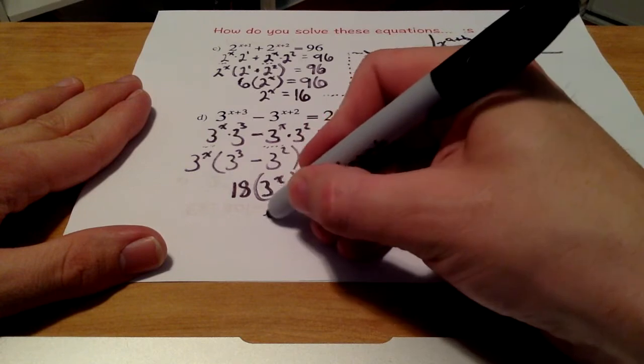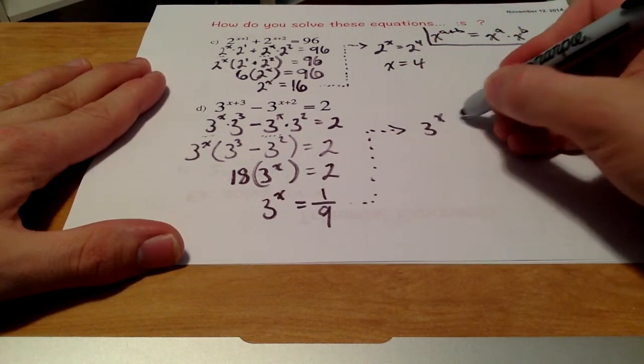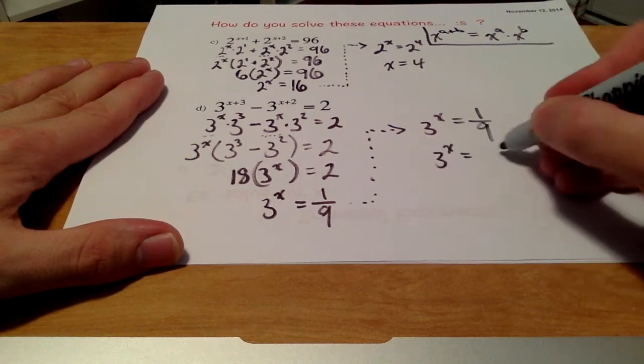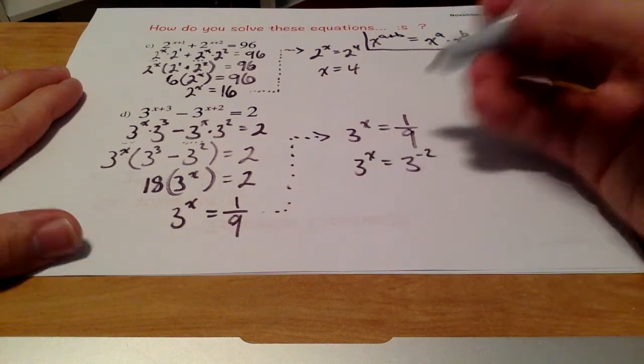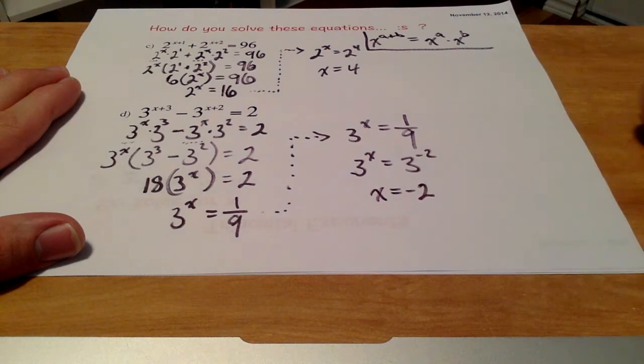So at this point, I can divide both sides by 18, which reduces to 1 over 9. We can take 1 over 9 and write that as 3 to the power of negative 2. And then at this point, I've got common bases, so I can just ignore those bases and solve for my x value, which is negative 2.